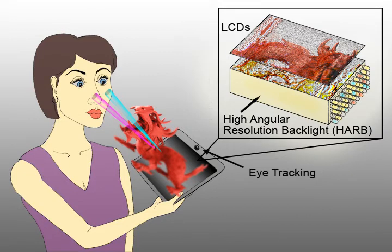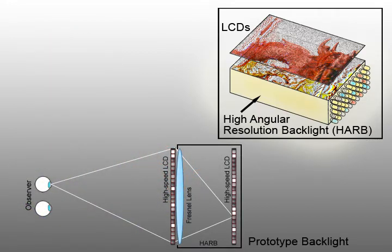A HAR backlight is capable of steering narrow, high-resolution light cones towards the eyes of the observer. We envision future implementations of high-angular resolution backlights to be thin devices, such as edge-lit light guides, as shown at top. For our prototype display, we constructed a HAR backlight using a single large Fresnel lens and a high-speed LCD display behind a front LCD, as shown at bottom.